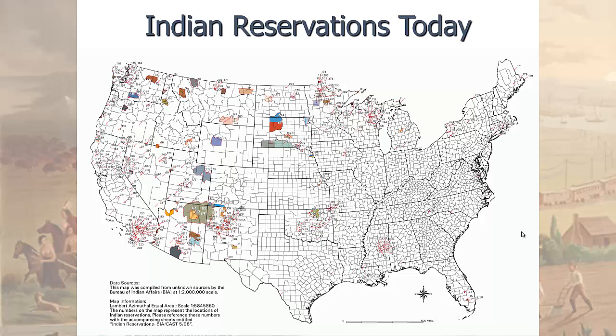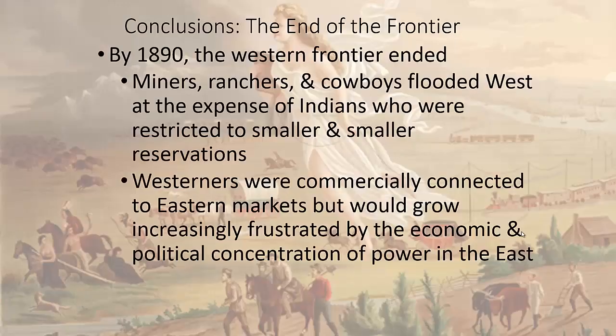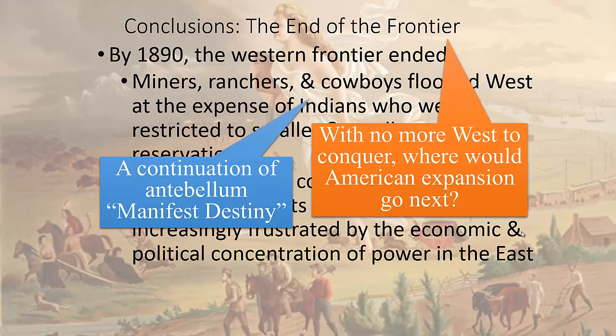The title of this lecture is 'A Century of Dishonor,' an homage to a book by Helen Hunt Jackson, an American activist who speaks out for Native Americans. She writes a book tracing the history of mainly six tribes back to the beginning of the United States and all of the atrocities committed against them. By 1890, the Western frontier has ended. In the 1880s, miners, ranchers, and cowboys flooded the West at the expense of Indians restricted to smaller and smaller reservations. But the railroad opens up the West to Eastern markets like never before, continuing Manifest Destiny — and with no more land to expand into, the question remains: where will America go next?